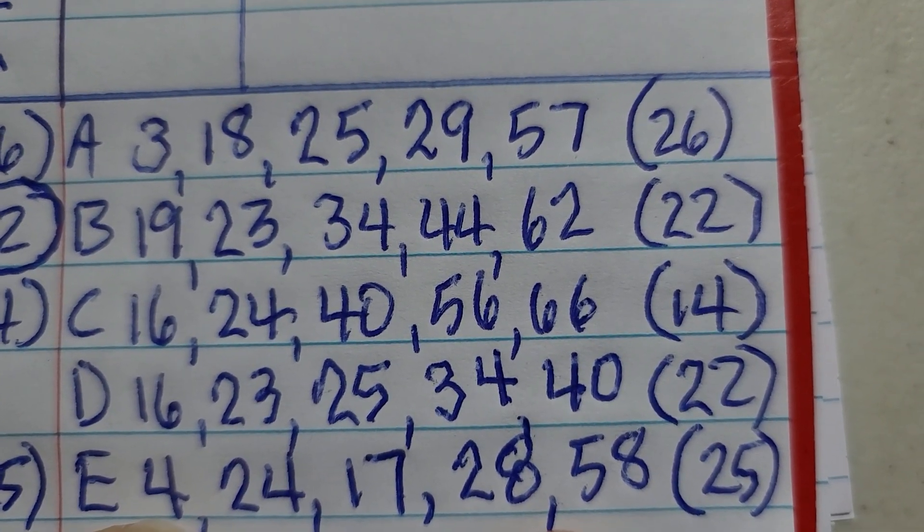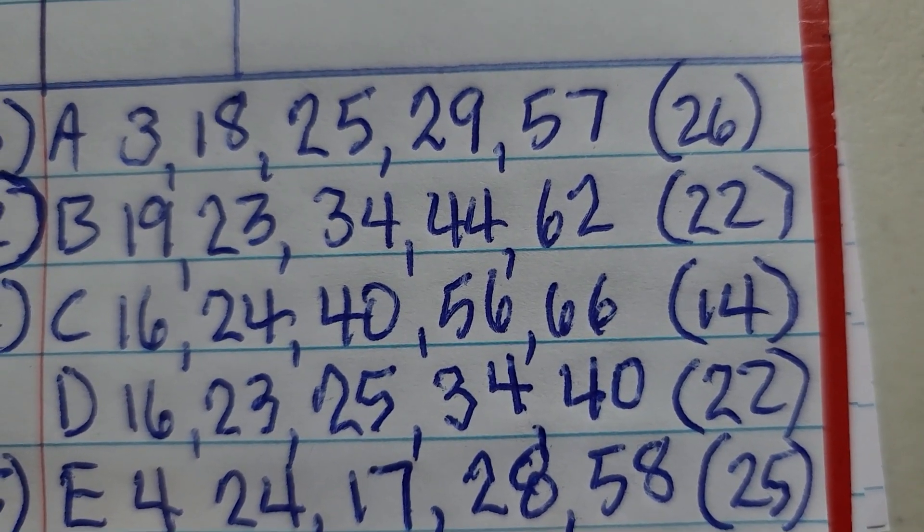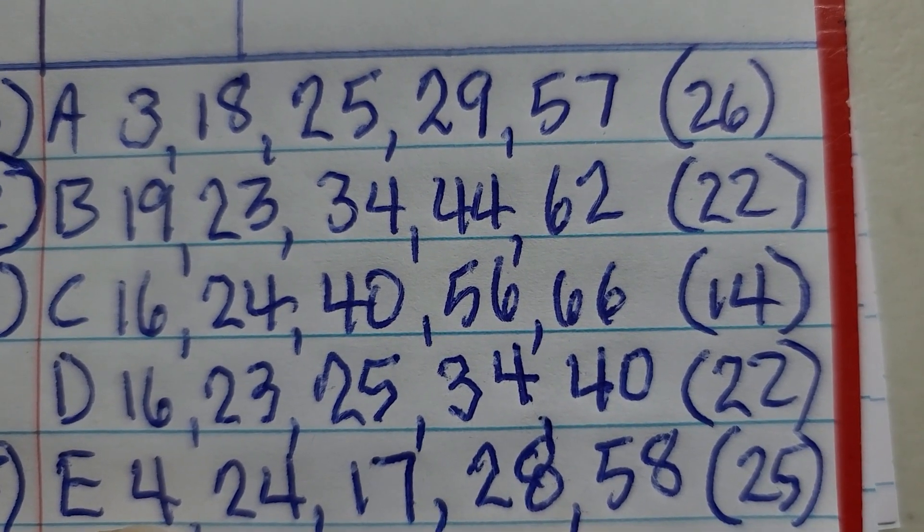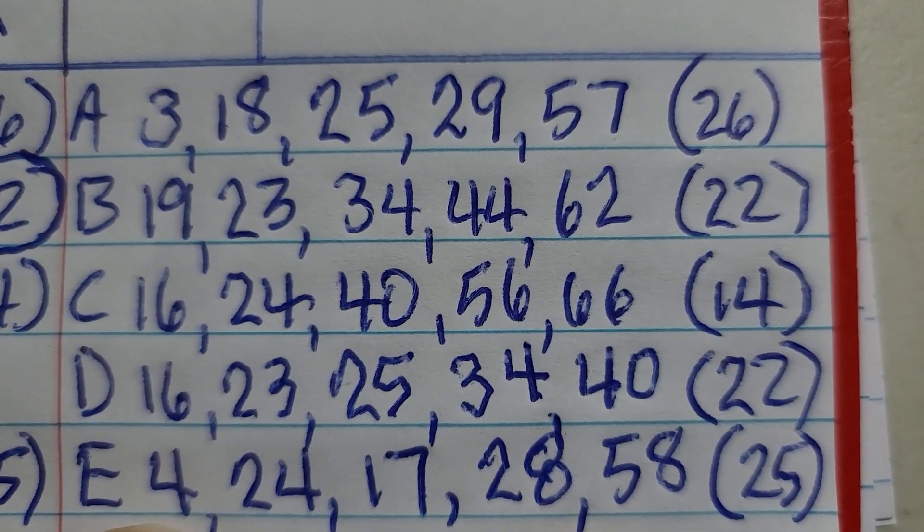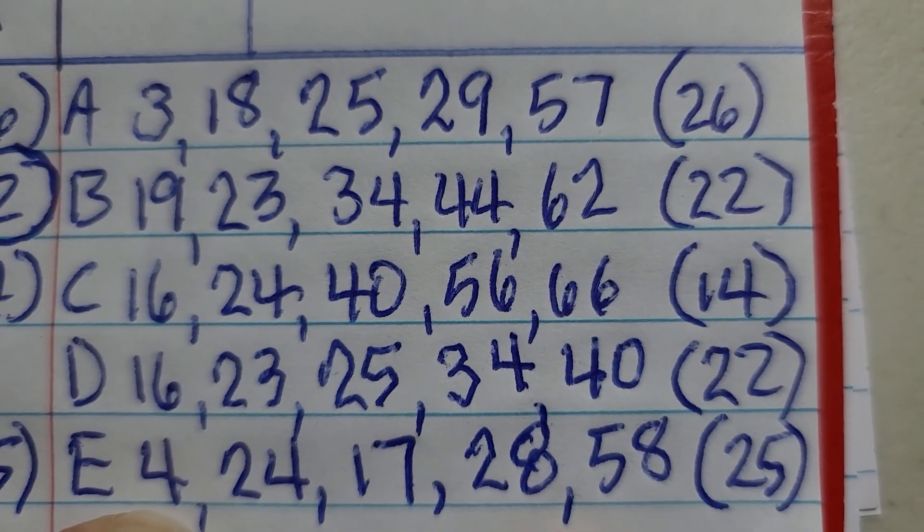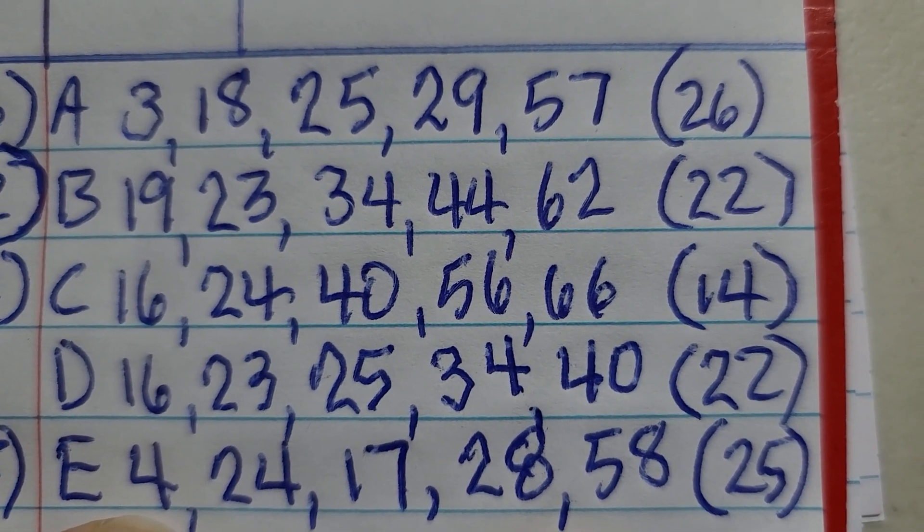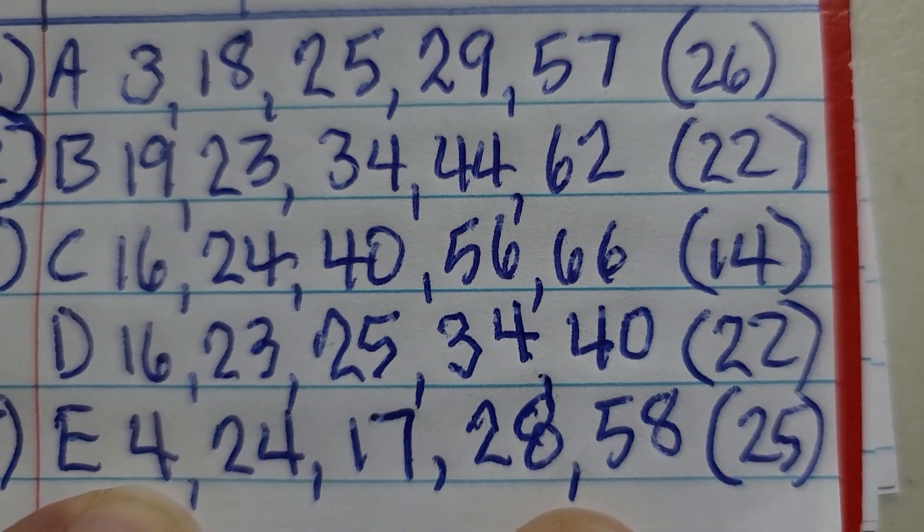Line C is 16, 24, 40, 56, 66, and the Powerball is 14. Line D, which is a composite of the numbers that I created tonight, is 16, 23, 25, 34, 40, and 22 for the Powerball.